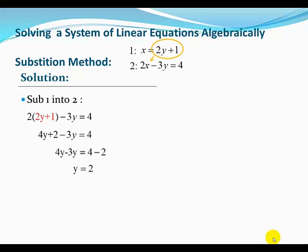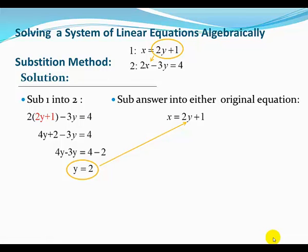Now what we can do to solve for x is take this answer and sub it into either of the original equations. I'm going to put it into equation 1, so everywhere I see a y in that equation, I'm going to replace it with our answer, y equals 2. So x is going to be 2 times 2 plus 1, or x equals 5.